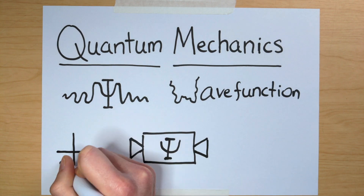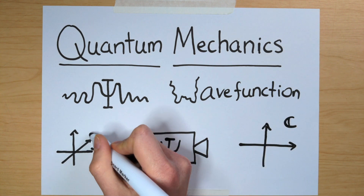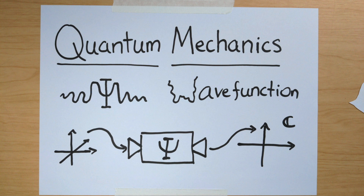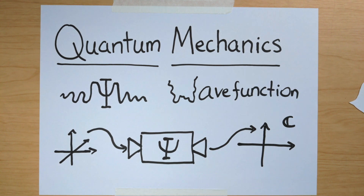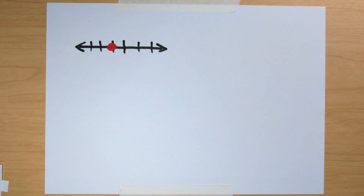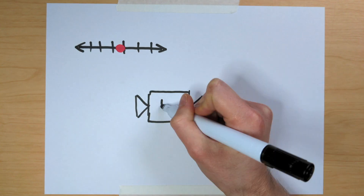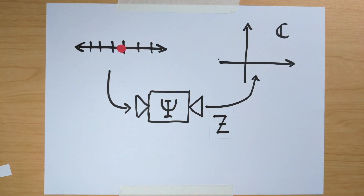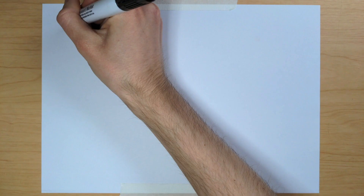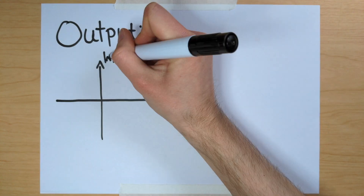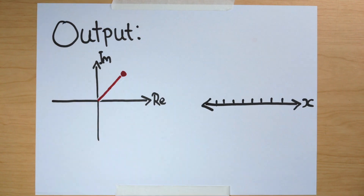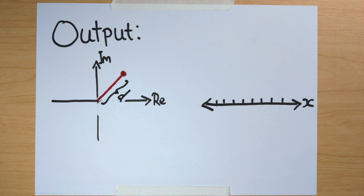The wave function is just a fancy mathematical machine which takes in some spatial coordinates — the position of a particle — and spits out a complex number. For example, if our particle can only move in one dimension, its position can be described by a single number, x, which is fed into the wave function. So how does this output of the wave function give us measurement probabilities?